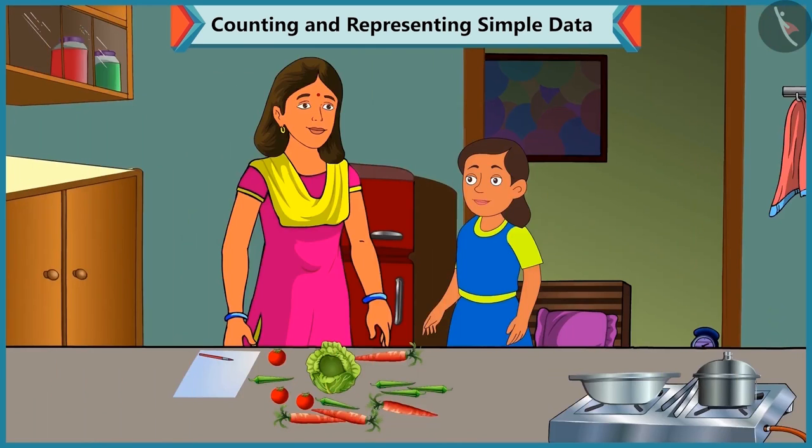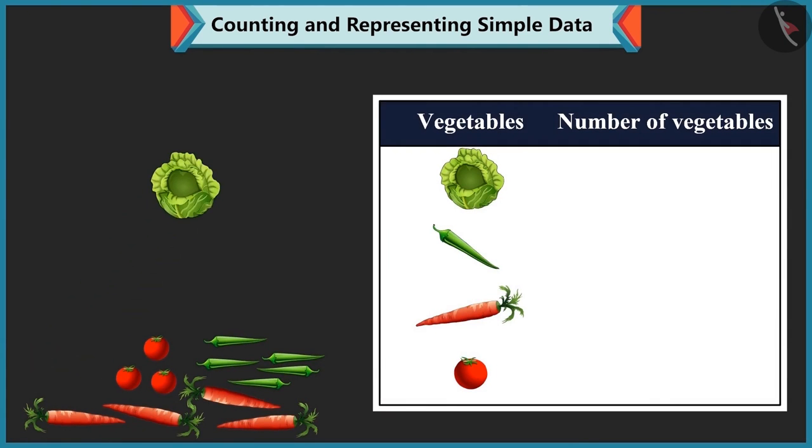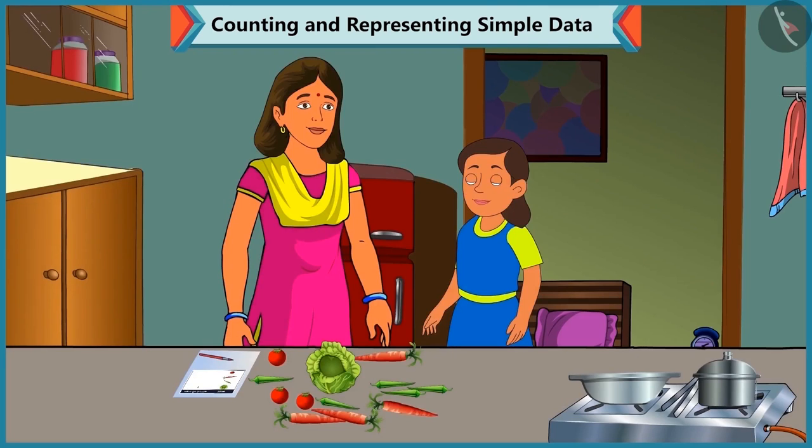Mummy, can I help you in grouping the vegetables? Yes, Bubbly. See, number of cabbages is 1 over here. So, we write 1 in front of cabbage. In the same way, we have to count the remaining vegetables and write the number against it. Yes, Mummy. I understood.